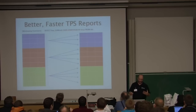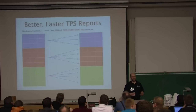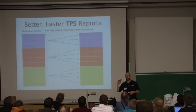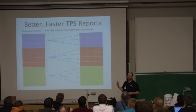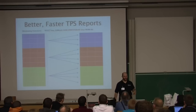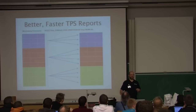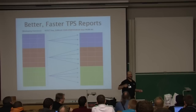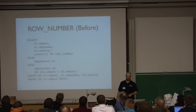One of the easiest things to demonstrate with windowing functions is numbering rows in output. Oracle has something called row_number which is handy, though it's not done in the standard way. Has anybody tried to do row numbers inside Postgres before? Not fun, is it? So we're going to add some fun — but here's how we used to do row numbers.